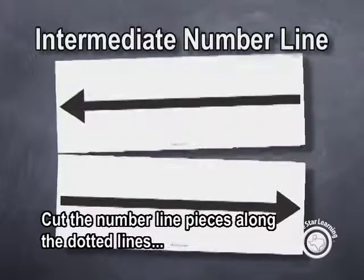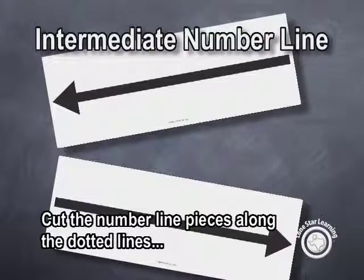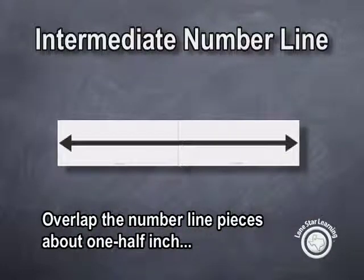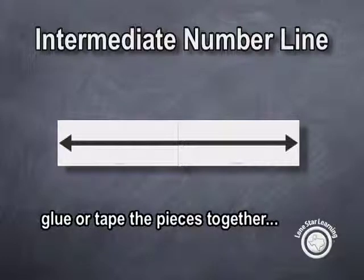Cut the number line pieces along the dotted lines. Overlap the number line pieces about one half inch and glue or tape the pieces together.